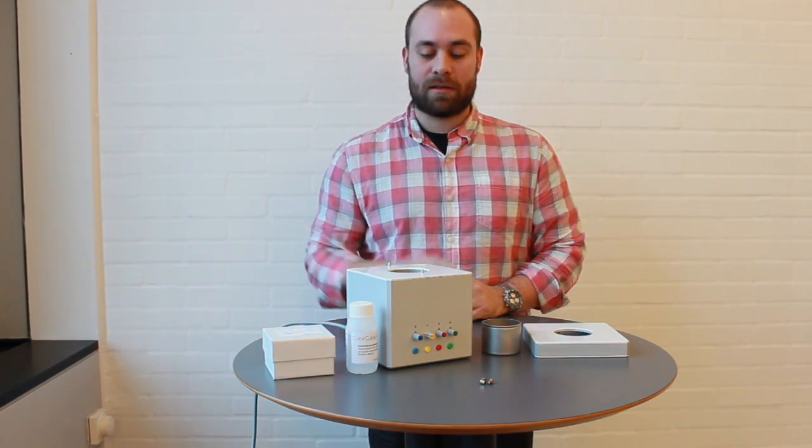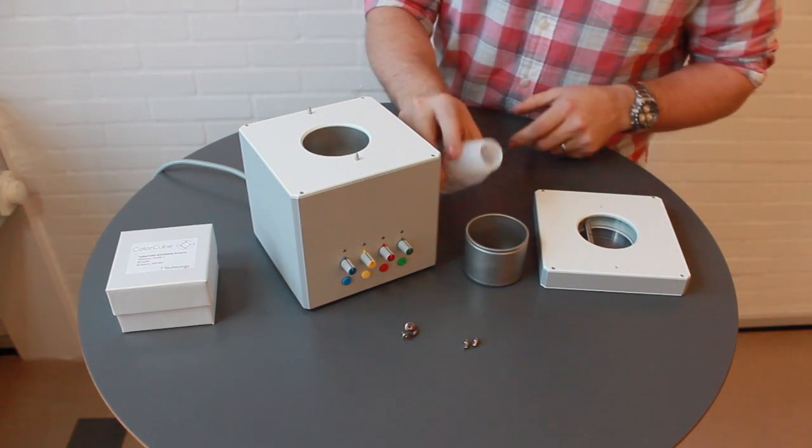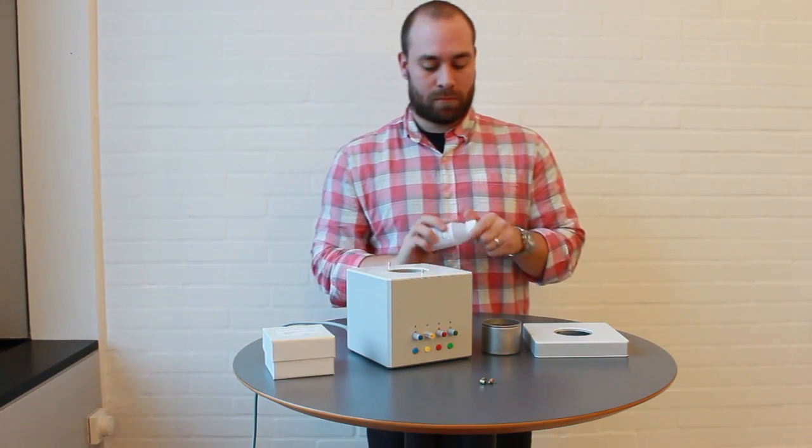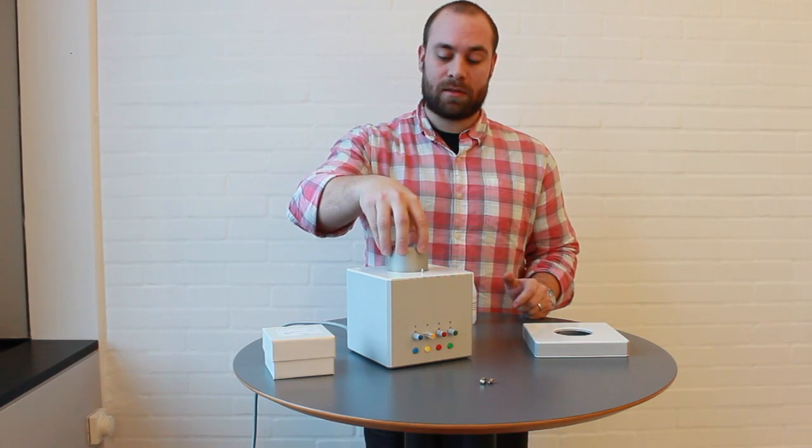When you want a color anodized component, add the process liquid to the process chamber. Place the chamber back inside the cabinet.